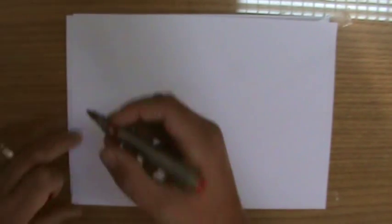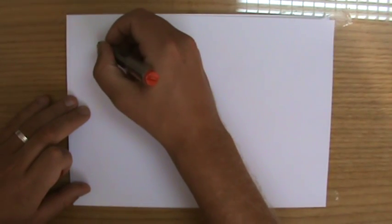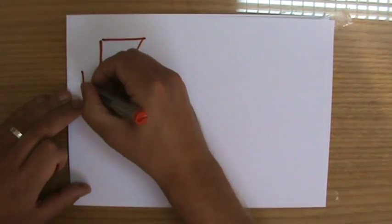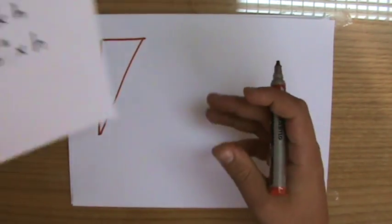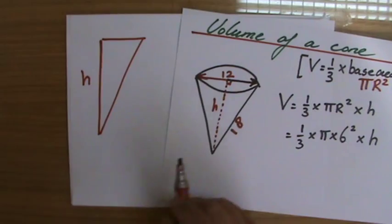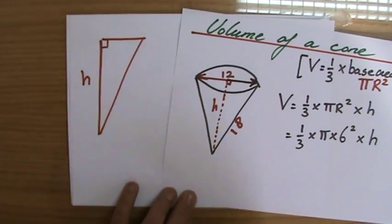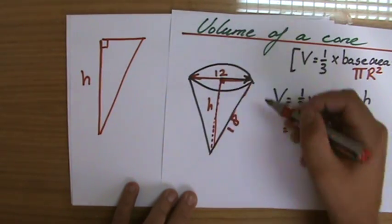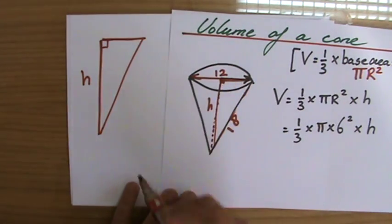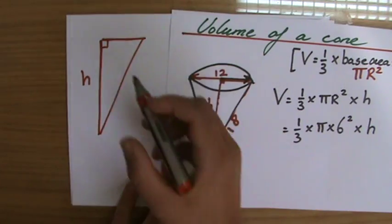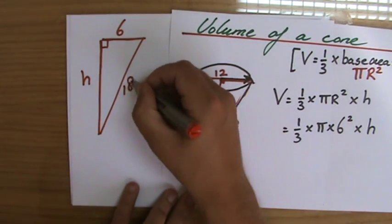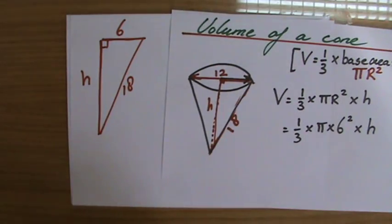Let me grab a piece of paper here. What do I have if I look at the situation? This is the height - go back to my cone. This is 90 degrees. What is the length of that one? That's the radius at six, and the slant height is 18. Can I calculate the height? Yes, of course.